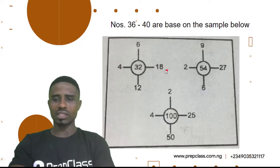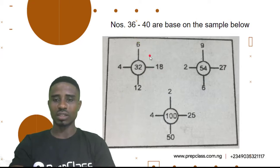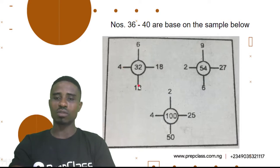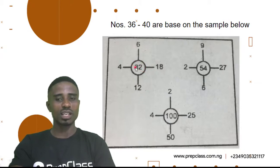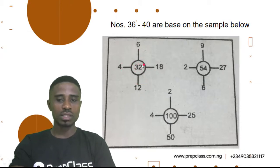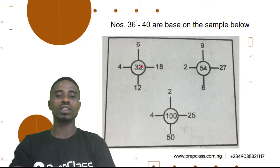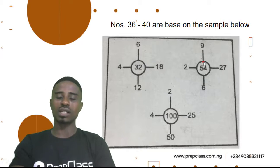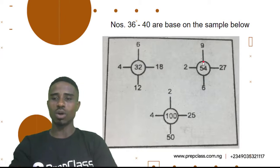So, 18 divided by 6 will give me 3. 3 times 4 will give me 12. 12 times 6 should give me 72, but 32 was written here. So, I can assume this method is correct, knowing fully that it ought to be 72 and not 32. Let's try others out and see what it should be.